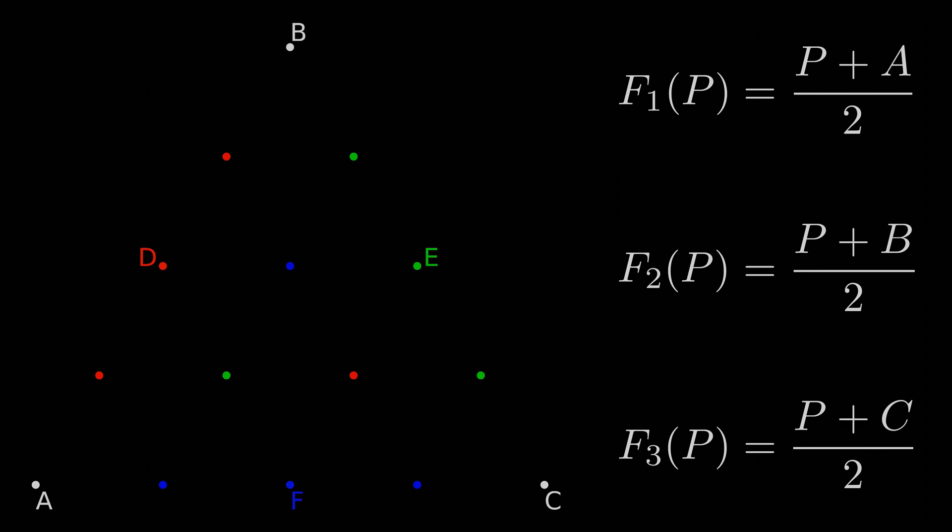I'll then force all of these new points to have three children again following the same rules. Those new kids will then again make kids that do the same thing, and those kids will do it again and again.